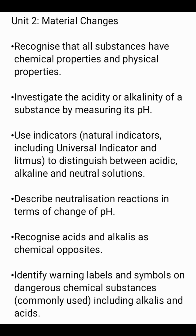Unit 2: Material Changes. Recognize that all substances have chemical properties and physical properties. Investigate the acidity or alkalinity of a substance by measuring its pH. Use indicators — including natural indicators, universal indicator, and litmus — to distinguish between acidic, alkaline, and neutral solutions. Describe neutralization reactions in terms of change of pH. Recognize acids and alkalis as chemical opposites. Identify warning labels and symbols on dangerous chemical substances commonly used, including alkalis and acids.